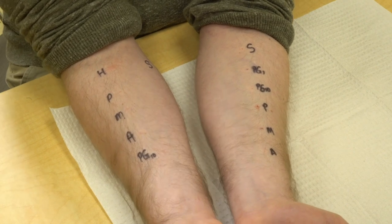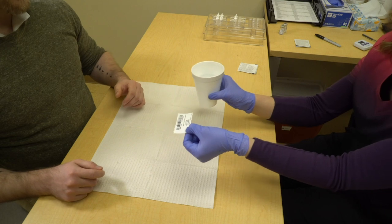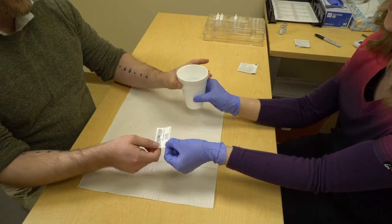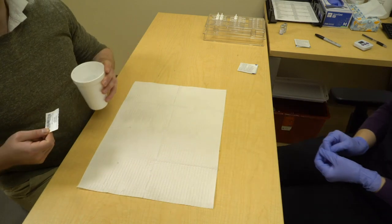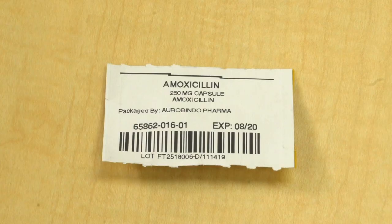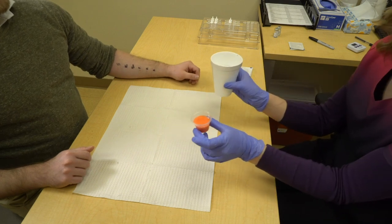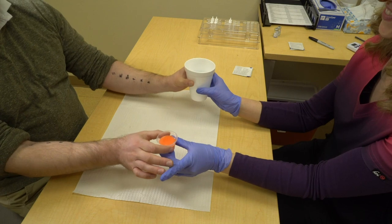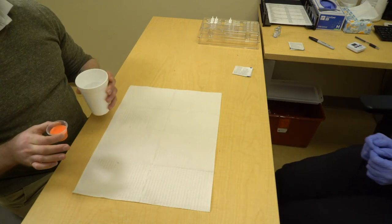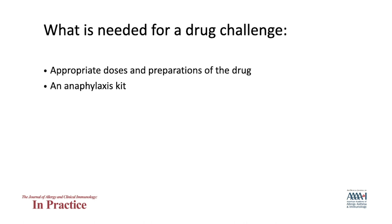When testing is negative or selectively negative, the next step is an ingestion or drug challenge. The drug challenge is a critical step to prove drug tolerance, since the negative predictive value of skin testing is less than 100 percent even for penicillin. For drugs beyond penicillin, the drug challenge is the gold standard most important step, since there is no established negative predictive value of skin testing. A drug challenge involves giving the drug in an observed setting and can be timed immediately following negative or selectively negative skin testing.